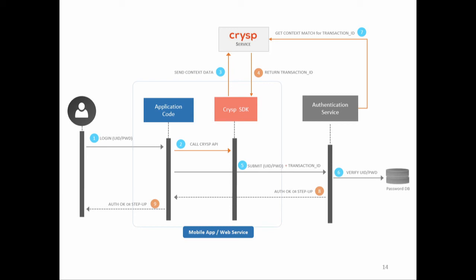Your authentication service verifies the credential as before, and at any point your server can use the transaction ID to request the context match score via our RESTful API. You can do this for every login, or only for specific high-risk transactions depending on your business requirements. If the context match score passes, you're fine; if it's a fail, you may need to do step-up authentication — like security questions or an OTP pushed to the device. We engineered this solution to be out of the critical path, so if our service is unavailable, your transactions can still go through using your primary password authentication.